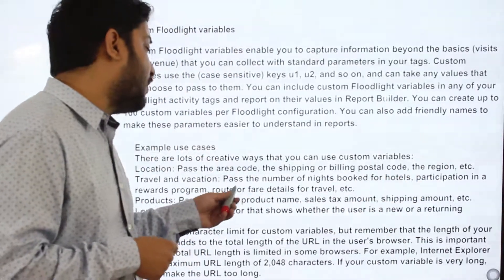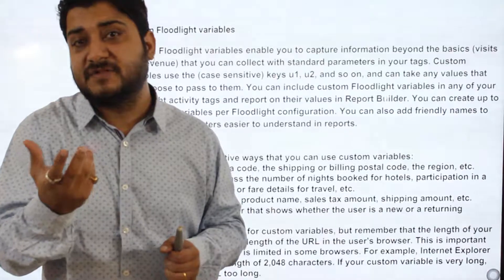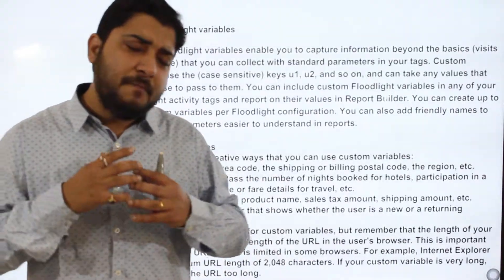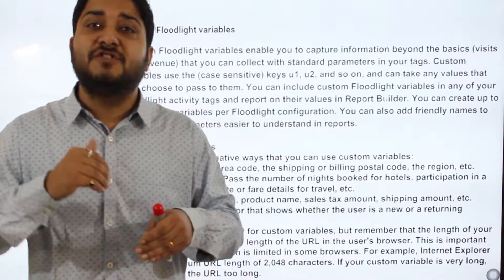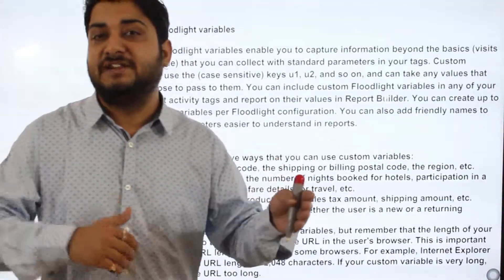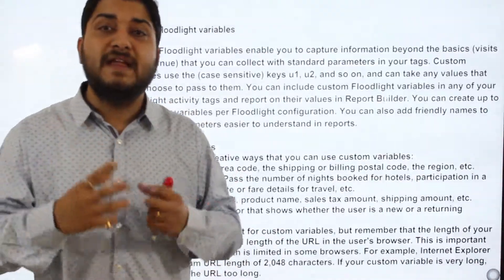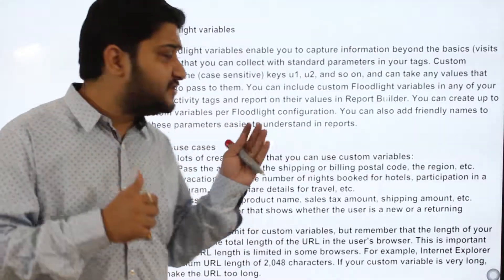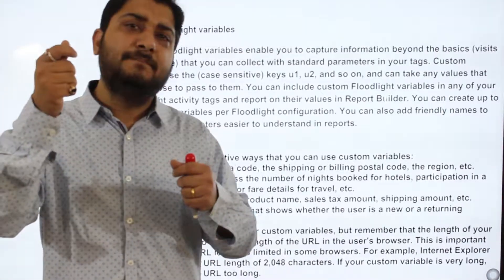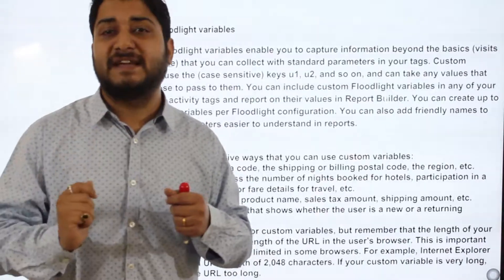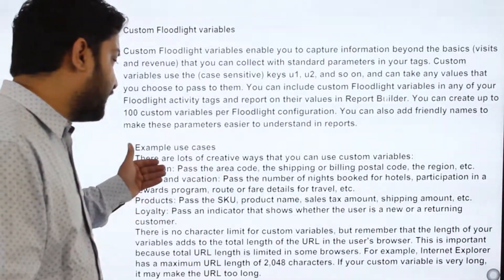For travel and vacation, you can pass the number of nights booked for a hotel, participation in a reward program, group or fare details. If you are a hotel or travel company, you can see how many users bought a suite, double bedroom, or standard room, and also capture flight ticket data — for example, Delhi to Mumbai or Delhi to Bangalore — to analyze which destinations are performing best in reporting.